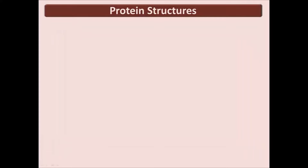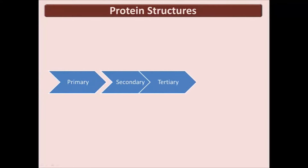Remember how polypeptides can fold, bend, and coil to form proteins? There are four levels of protein structure that need to be learned. The names of these levels are: primary structure, secondary structure, tertiary structure, and quaternary structure. Every protein has the first three levels. Quaternary structure only applies to proteins with more than one polypeptide chain.